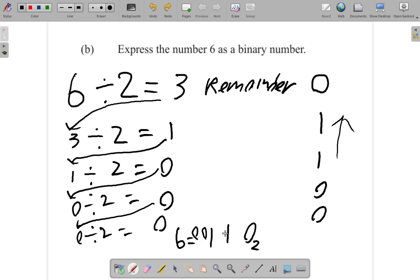If you write these zeros before, it would be 00110, but these zeros wouldn't make sense. It's like writing 006, it's just 6.